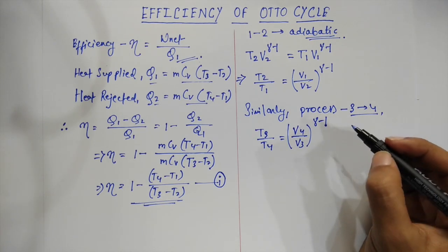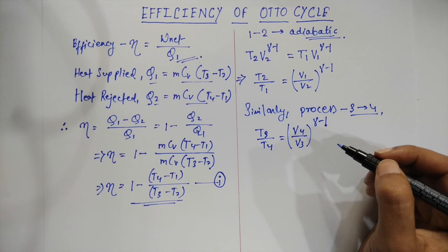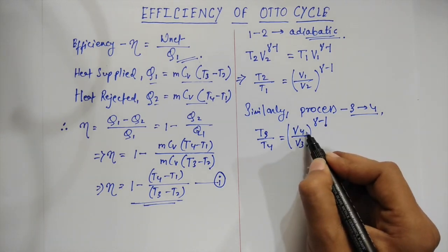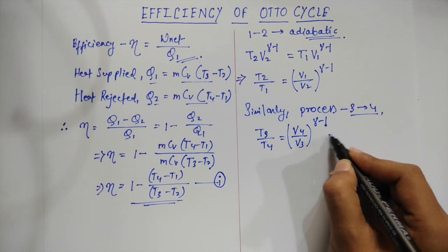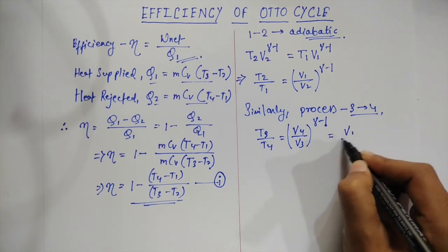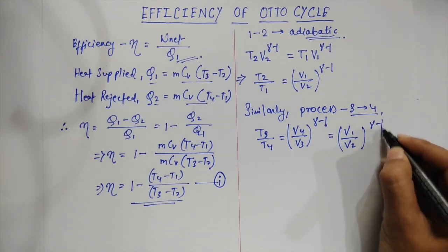Since the process 4 to 1 and 2 to 3 are isochoric processes, the volume V4 and the volume V3 we can write as V1 by V2 whole to the power gamma minus 1. This can be seen from the PV curves.